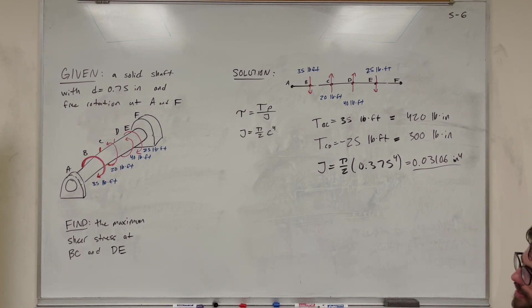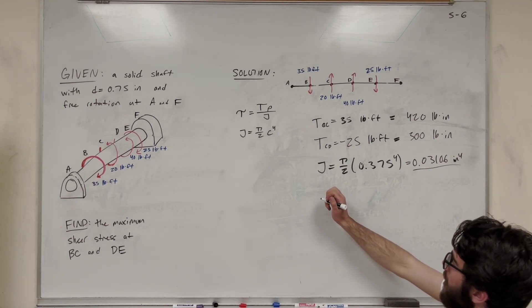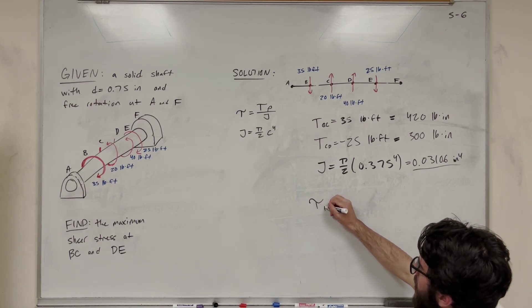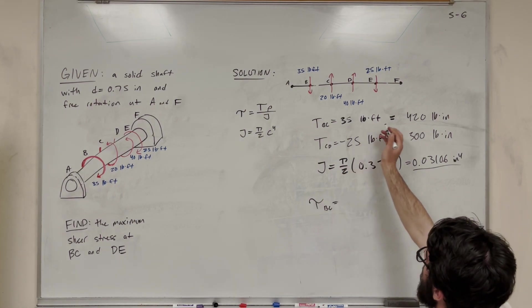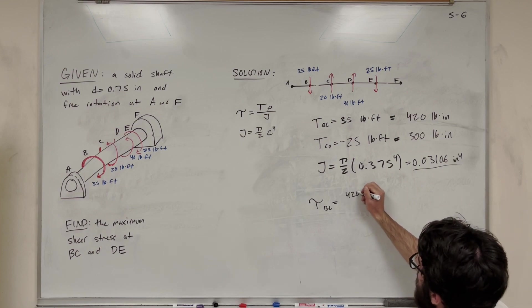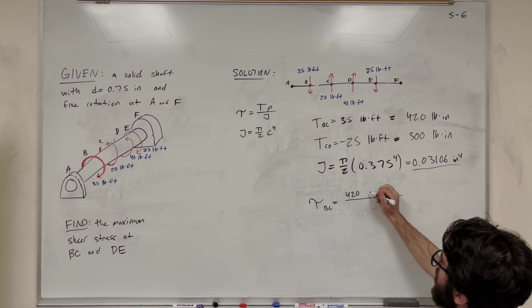Okay, so then now what we need to do to find the shear stress is plug it into this equation. So the shear stress, let's start with BC. We have our torque 420. Rho, which is distance, so that's again our radius, not diameter.